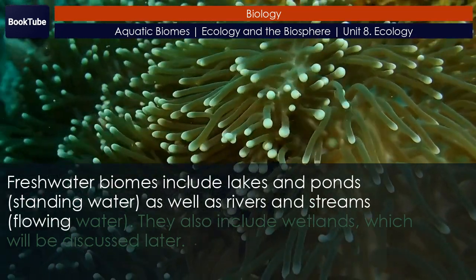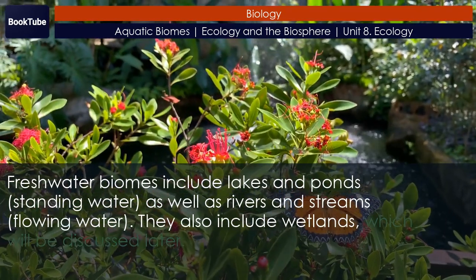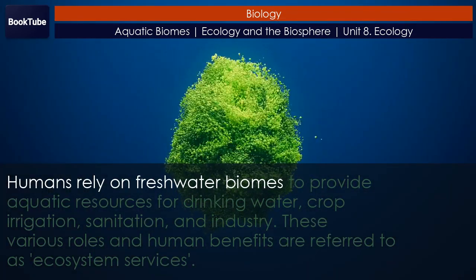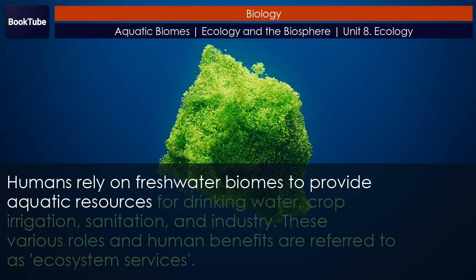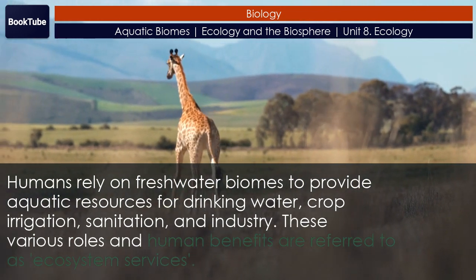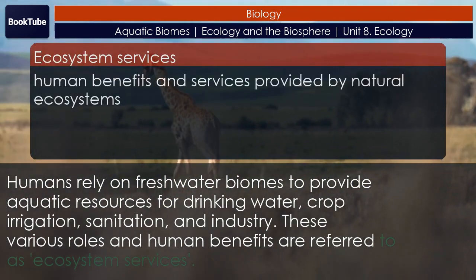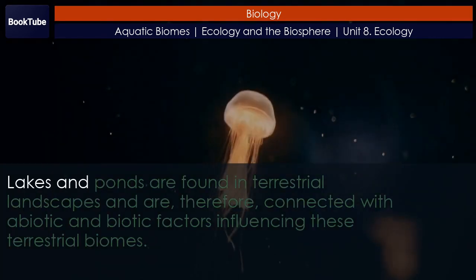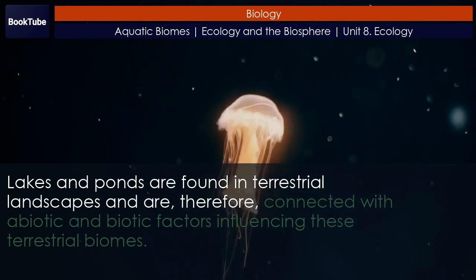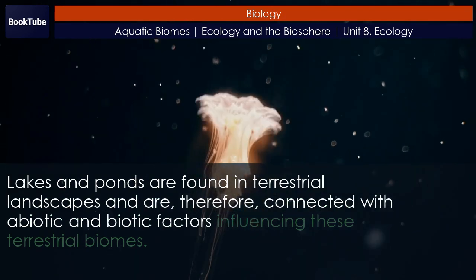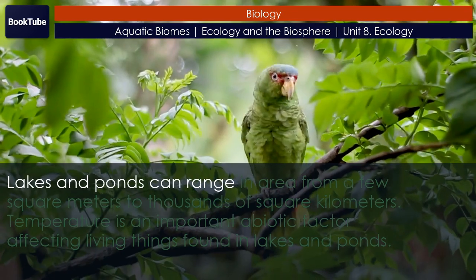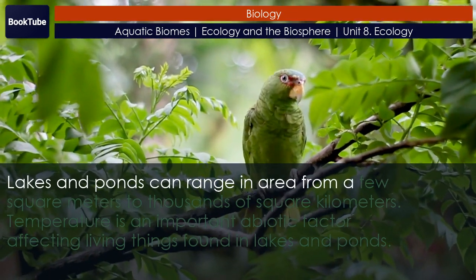Freshwater biomes include lakes and ponds — standing water — as well as rivers and streams — flowing water. They also include wetlands, which will be discussed later. Humans rely on freshwater biomes to provide aquatic resources for drinking water, crop irrigation, sanitation, and industry. These various roles and human benefits are referred to as ecosystem services. Lakes and ponds are found in terrestrial landscapes and are therefore connected with abiotic and biotic factors influencing those terrestrial biomes.